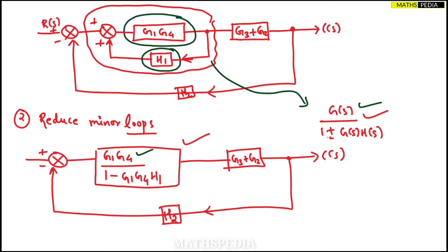For the sign in the formula: look at which sign the feedback loop faces at the summing point. Here the feedback H1 faces a plus sign at the summing point, so we use minus in the denominator — giving 1 − G1·G4·H1. If a minus sign were present, we would use plus. So the minor loop reduces to G1·G4 / (1 − G1·G4·H1).